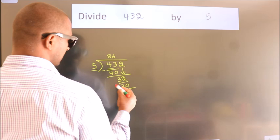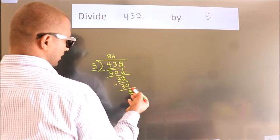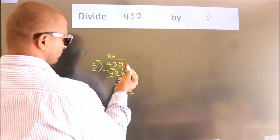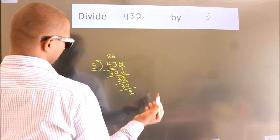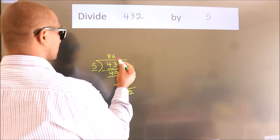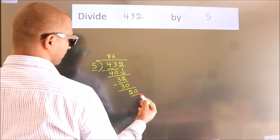Now we subtract. We get 2. After this, no more numbers to bring down. So what we do is, we put a dot and take 0. So 20.